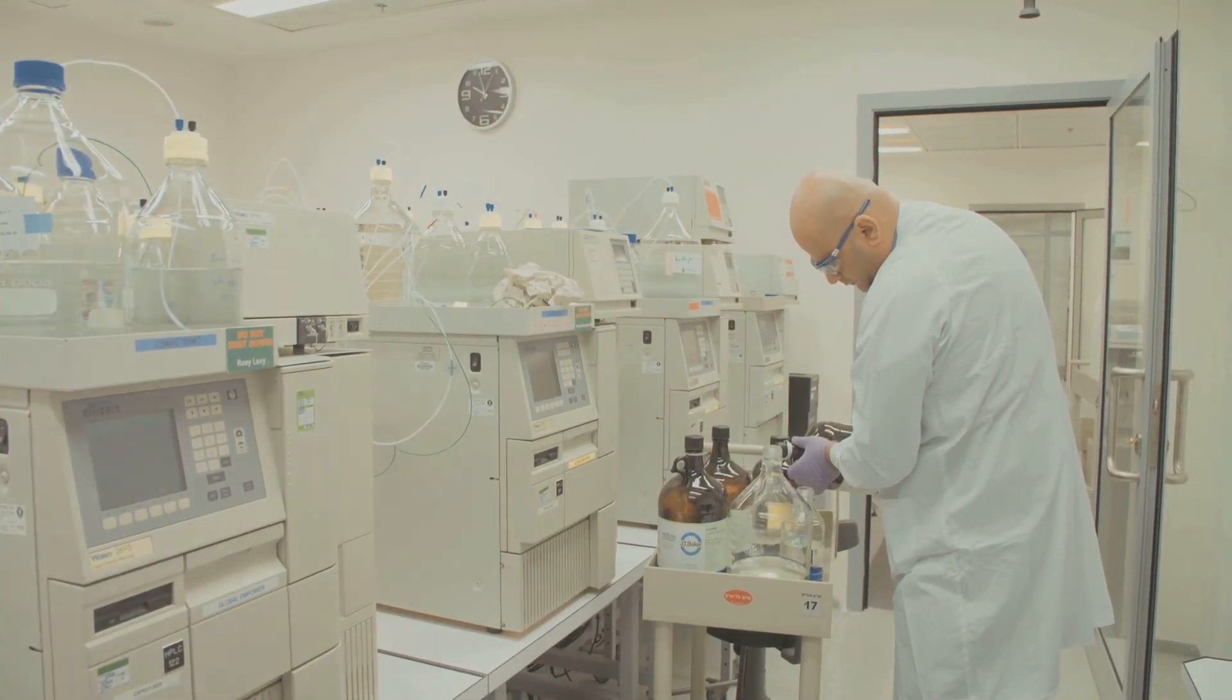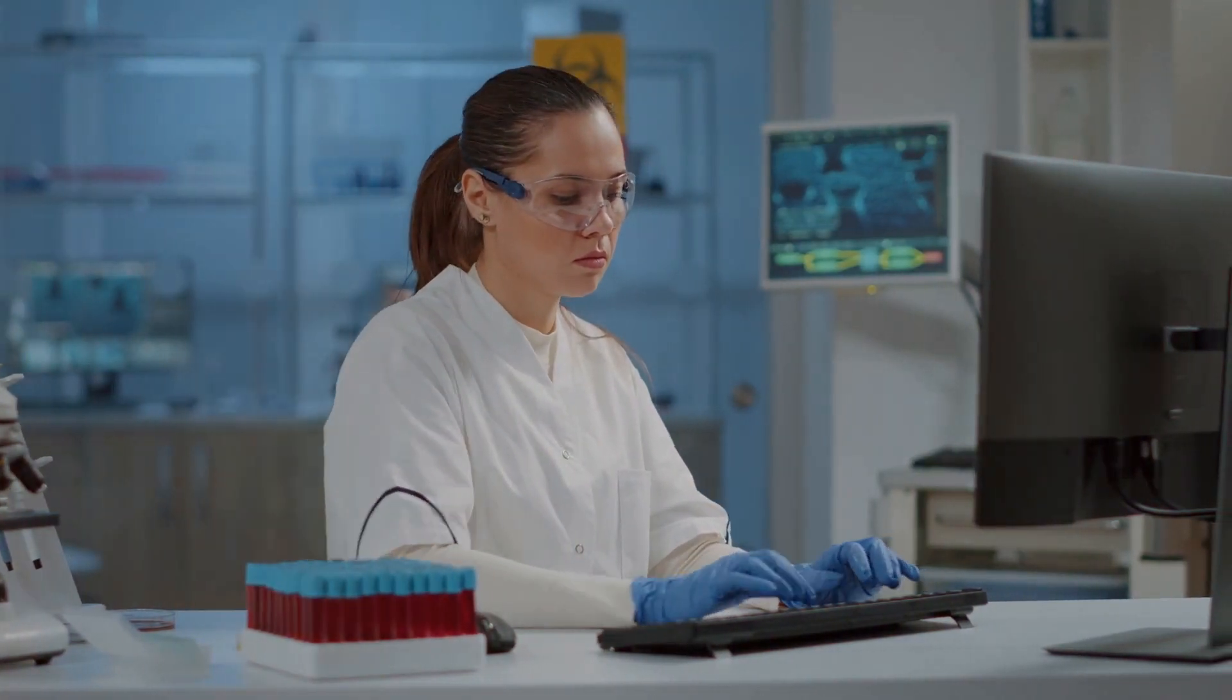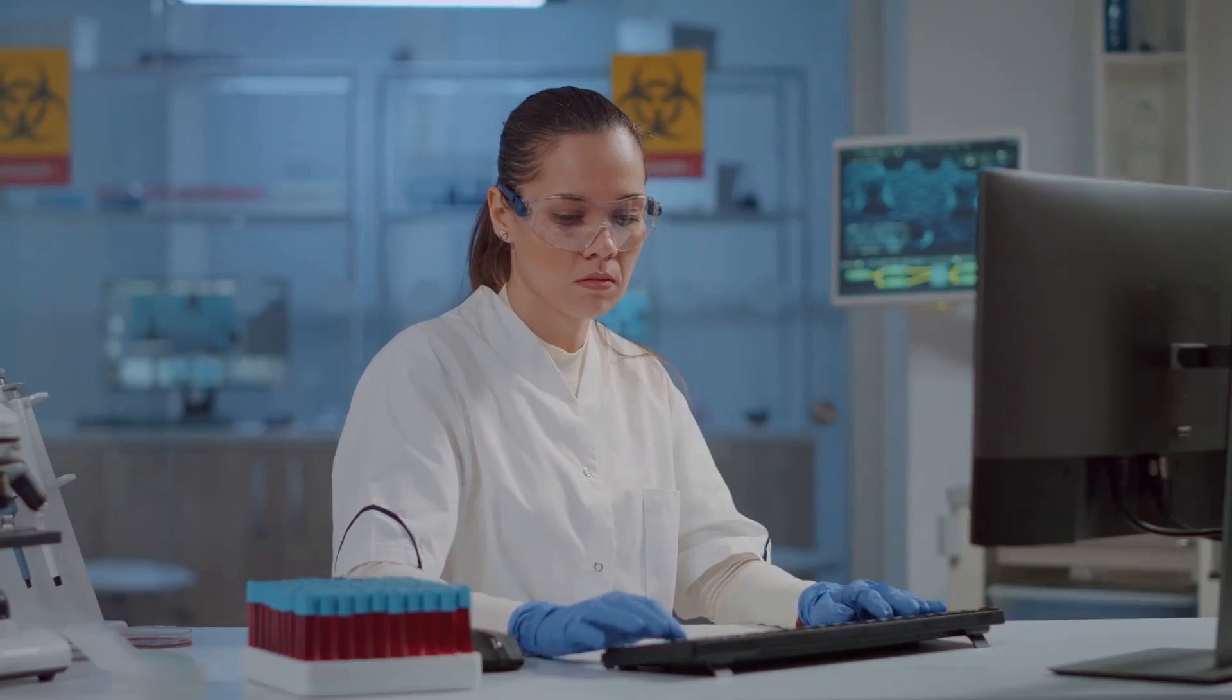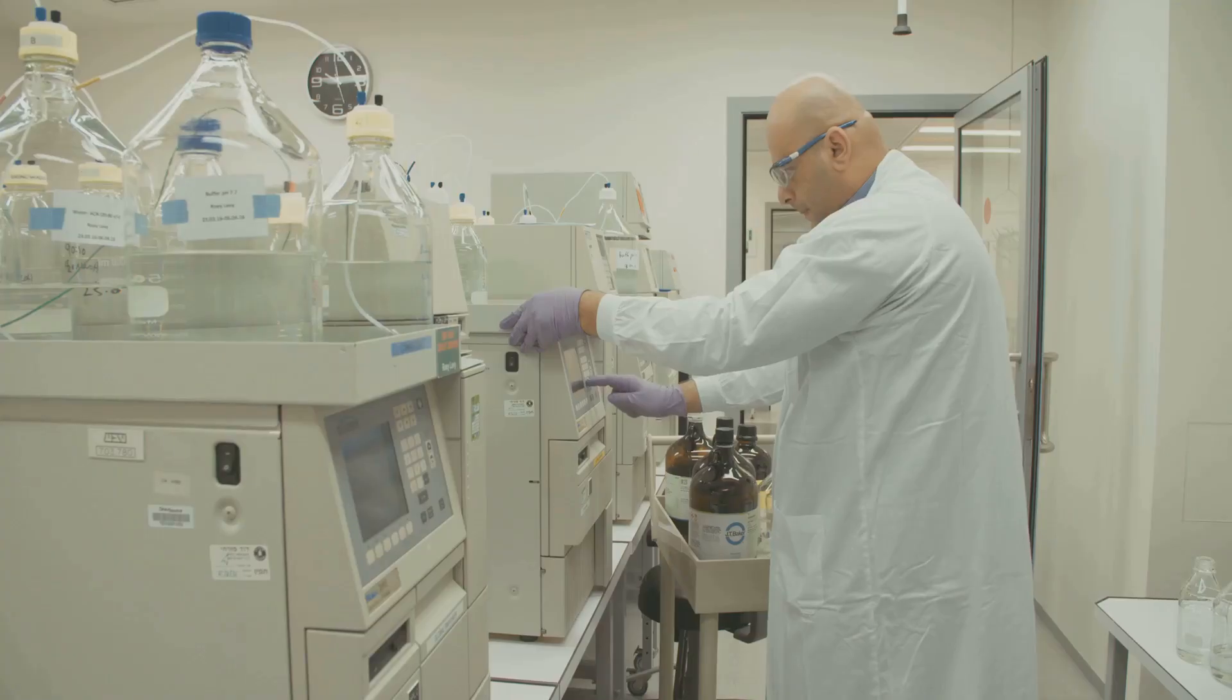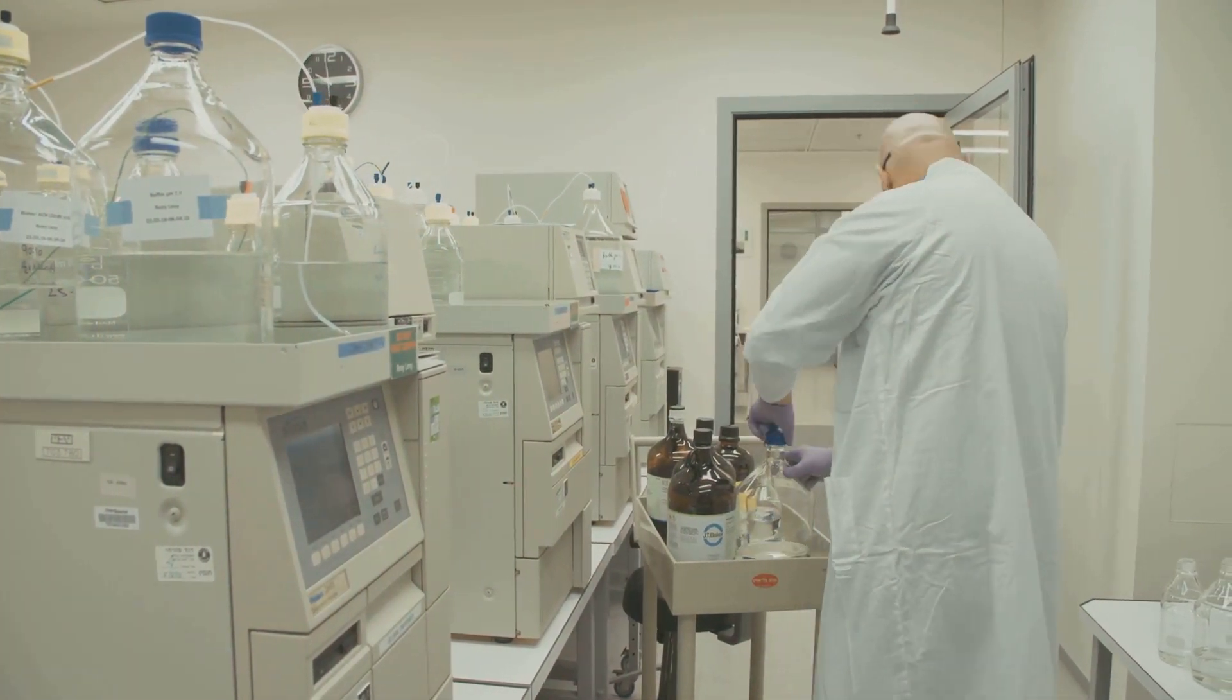But what exactly does that mean? Agilent provides critical tools and technologies to scientists and researchers in various fields, helping them make breakthroughs in areas like genomics, pharmaceuticals and food safety. Their products range from mass spectrometers to liquid chromatography systems and beyond.